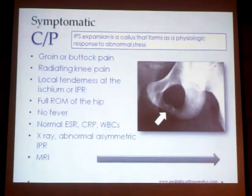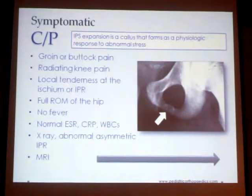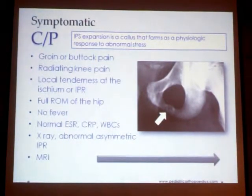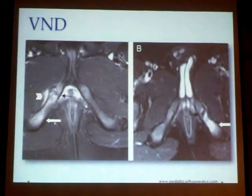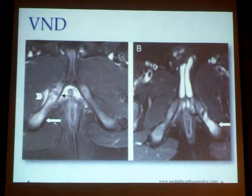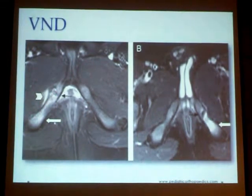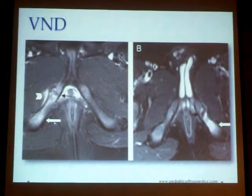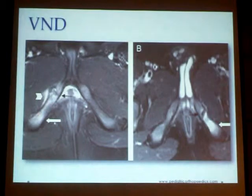Finding these radiological findings alone is of no significance if the patient is asymptomatic. The MRI may show enhancement and increased bone edema of the ischium and ischiopubic ramus.